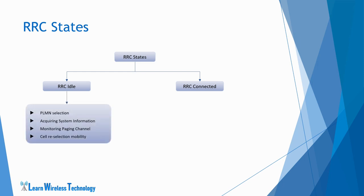In RRC idle state, the UE performs functions such as PLMN selection, acquiring system information, monitoring paging channel, cell reselection mobility, etc. There is no RRC context of the UE stored in the eNodeB. The UE shall have a unique identity allocated which would help to identify the UE in a tracking area.